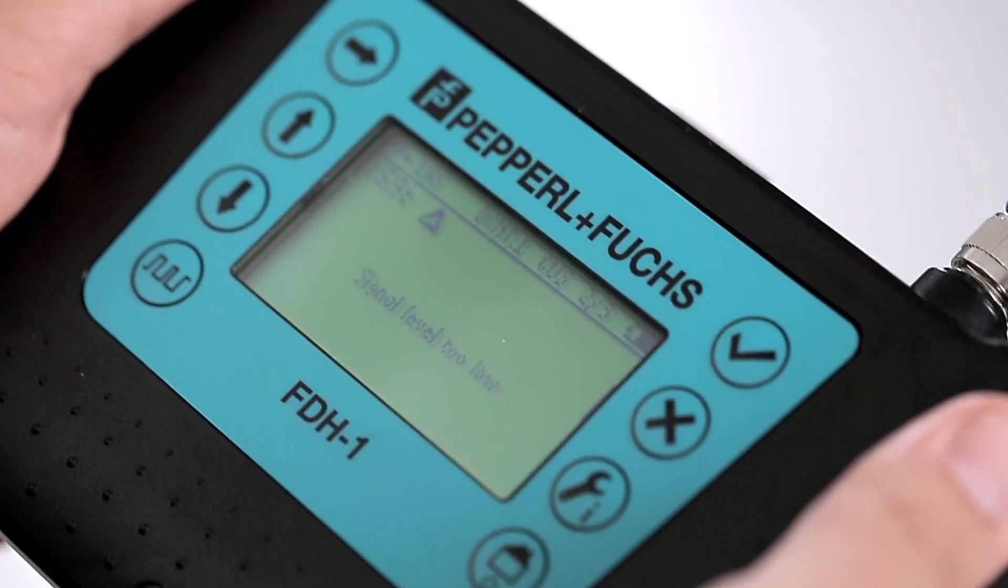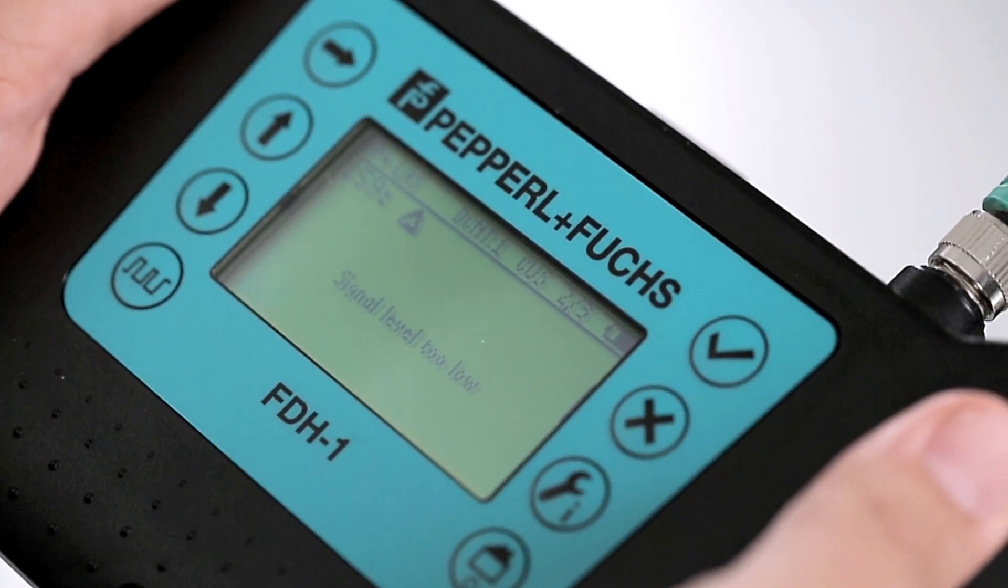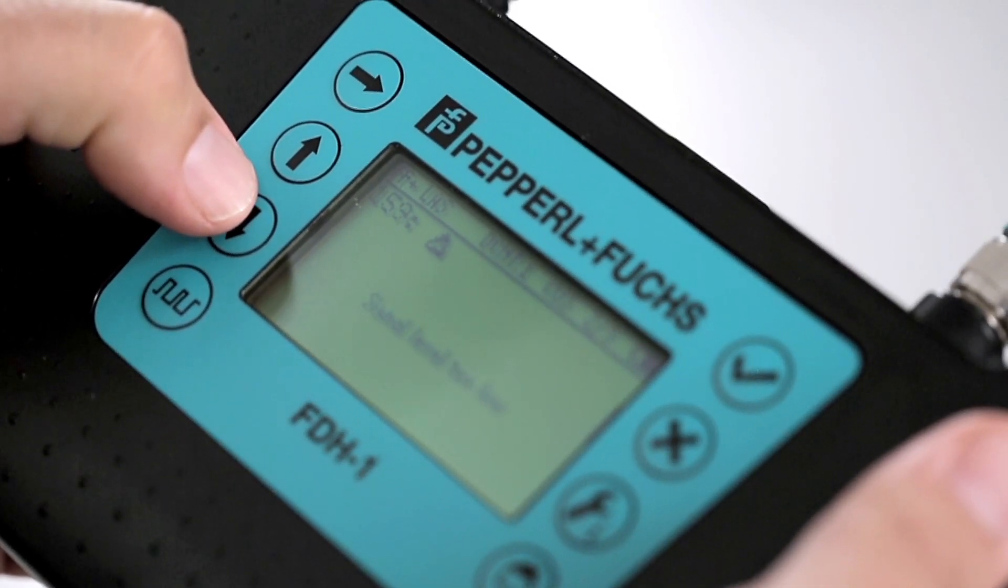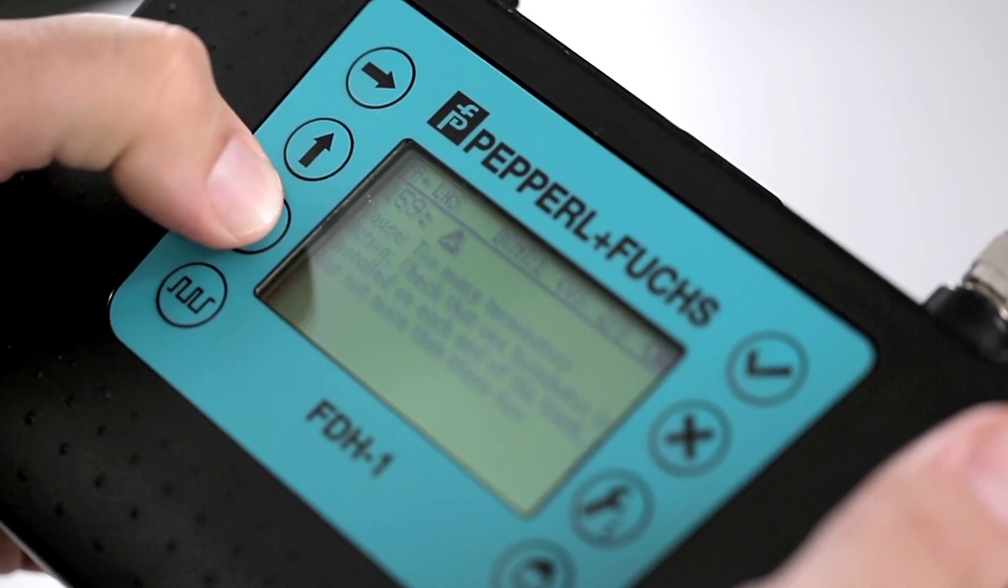Here it says, signal level too low. Up and down arrows access a list of indications per message.